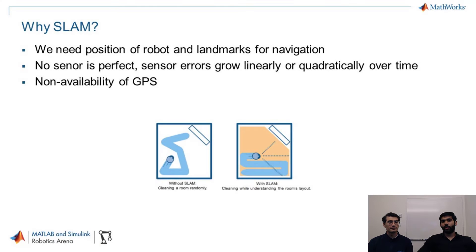So why do we need SLAM? We need SLAM for navigation in unknown environments where we need to estimate the position of robots and landmarks. Another reason is that no sensors are perfect — for motion sensors, errors grow with time. Non-availability of GPS also causes your system to drift over time.